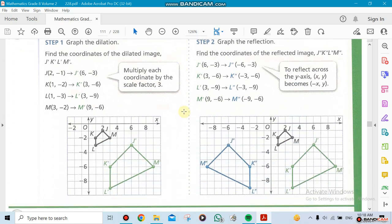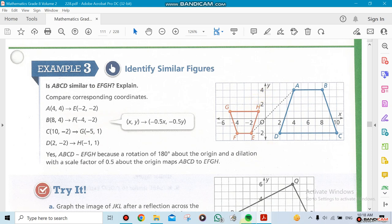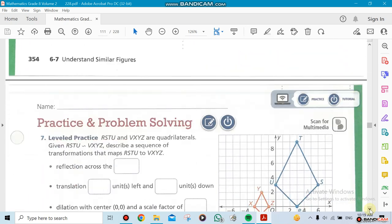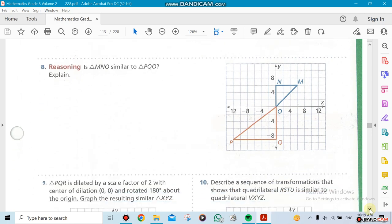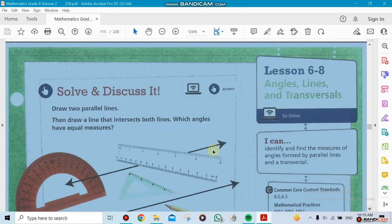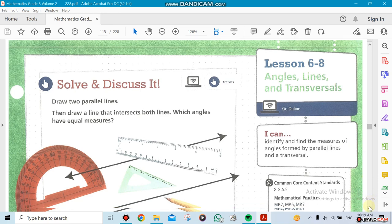Now let's go to the next section, which is about transversal lines. Section 6.8 is about the angles, lines, and transversal lines. I'll show you what it means because maybe this is a new terminology that you have never saw before.